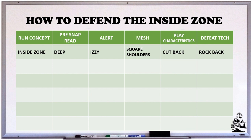A key play characteristic of inside zone is automatic cutback. If you look at most inside zone plays, they do cut back. How we defeat that — our defeat technique — is rockback.